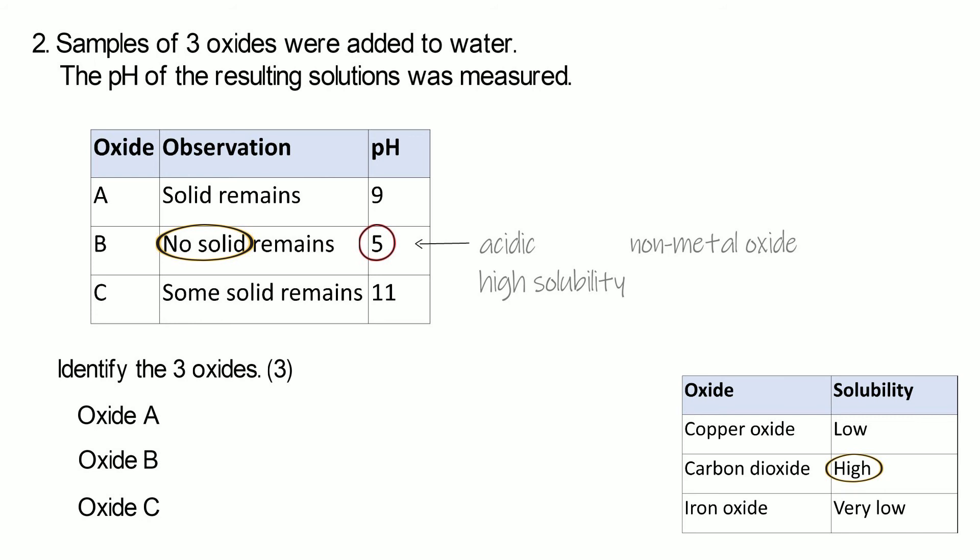And then it tells us in the table that carbon dioxide, which is a non-metal oxide, has a high solubility. So we can see that B is going to be carbon dioxide. So we would identify that oxide B is carbon dioxide.